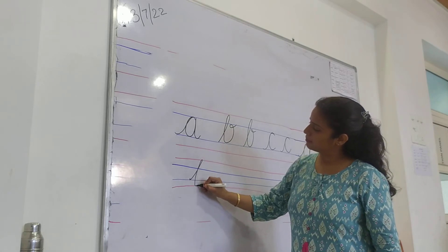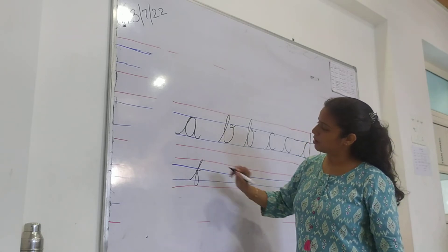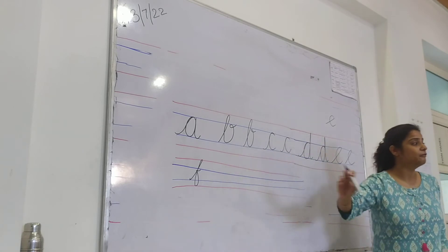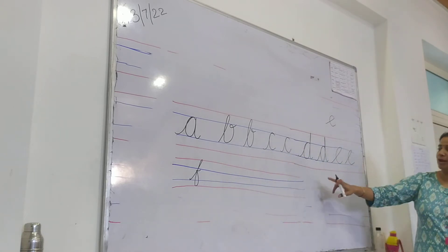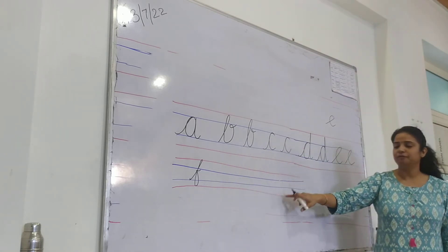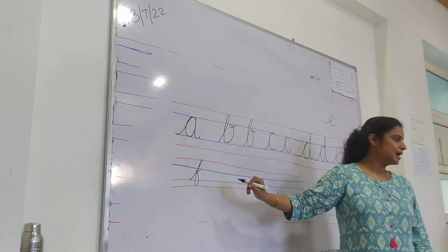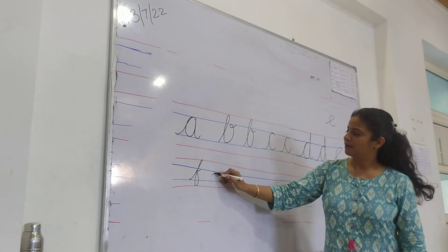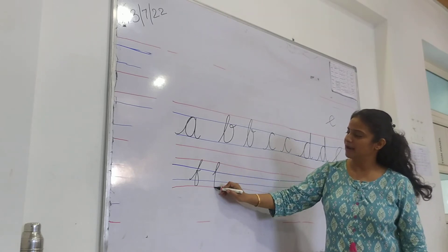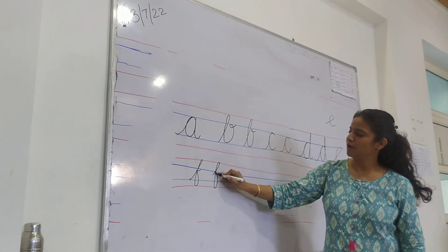Up, down, up and out. This F letter covers over the 4 lines. 4 lines may I have 1, 2, 3, 4. Okay, see. From blue line it will start. Red line, red line, blue and out.